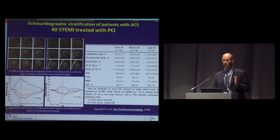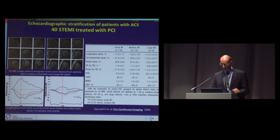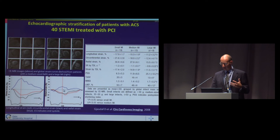Patients were divided into three groups according to infarct size. On the upper left image we see an MRI study of a patient with a medium-sized infarction, and below we see global strain curves — radial strain, circumferential strain, and longitudinal strain. On the right, we see a patient with a large infarction, and there is significantly lower deformation in every direction.